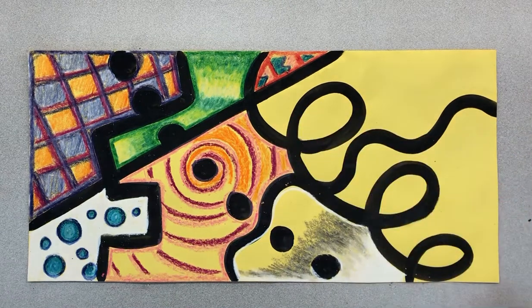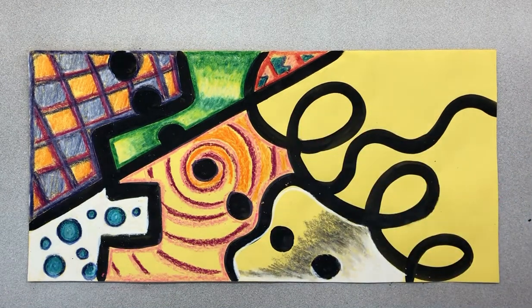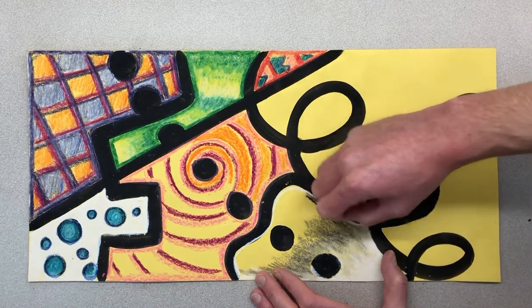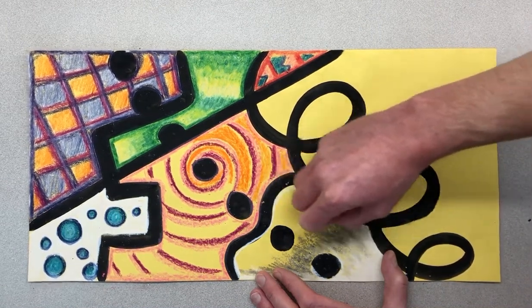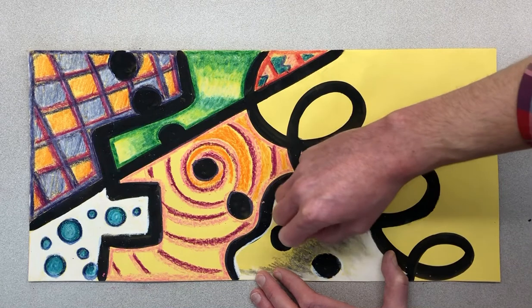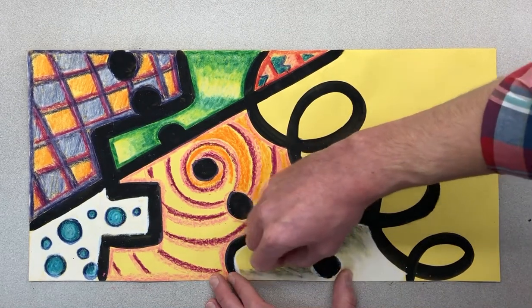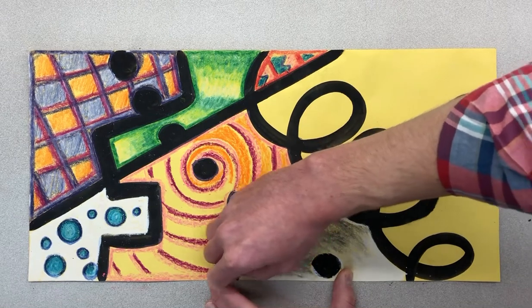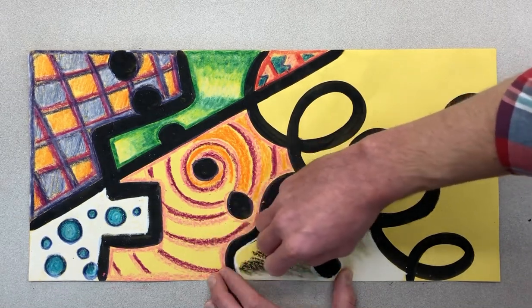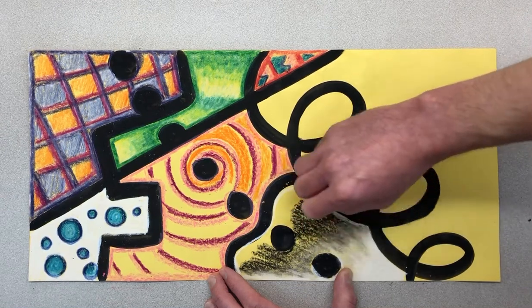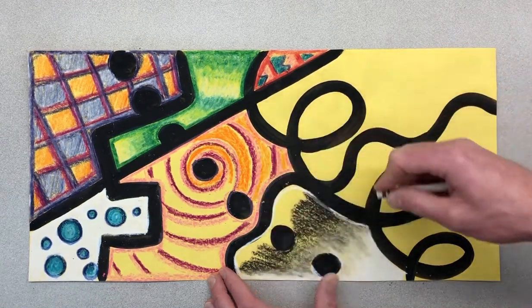And then we'll move that into some black around that dot, even though the dot's black. And I could fill the rest of this with black.